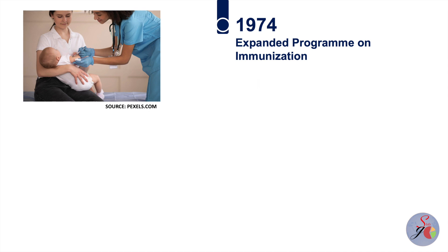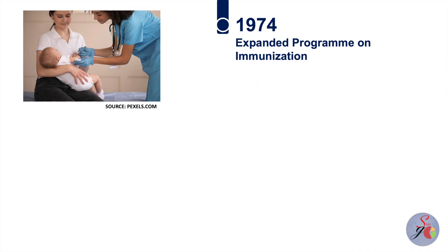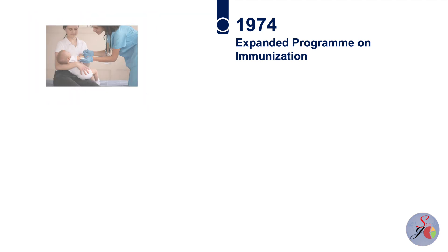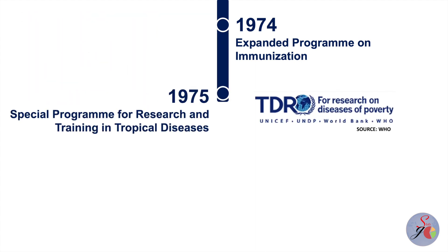In 1974, WHO founded the Expanded Programme on Immunisation to bring life-saving vaccines to all the world's children. This programme has helped in saving millions of lives across the world. In 1975, WHO established and began hosting the Special Programme for Research and Training in Tropical Diseases.